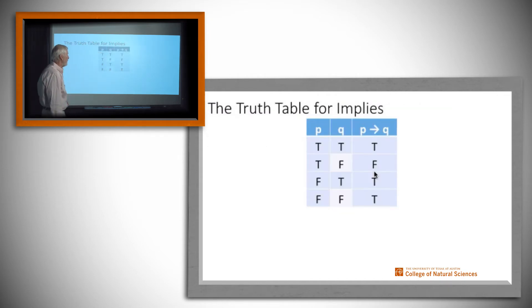Here is the truth table right here. We're going to call, in a statement P implies Q, or sometimes read if P then Q, we're going to call P the antecedent and Q the consequent.